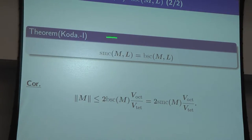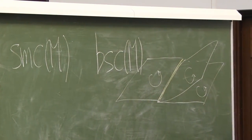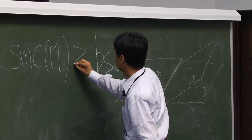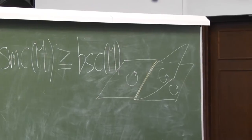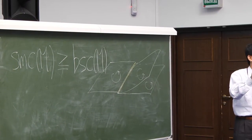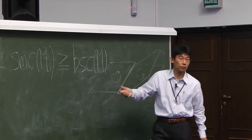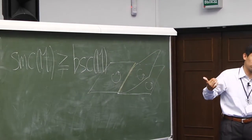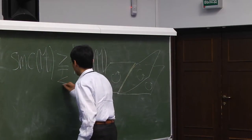The main theorem is: SMC equals BSC. The inequality SMC ≥ BSC is easier: given a stable map, consider its Stein factorization; if there is a singular fiber of type 3, shift it to get a shadow. Therefore from any stable map you can always make a shadow, proving this inequality as a corollary of Costantino–Thurston. The other direction — BSC ≥ SMC — is not obvious.